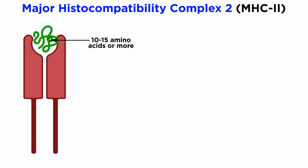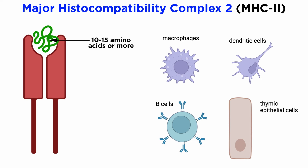MHC class II molecules bind peptides that are slightly larger than those bound by MHC class I molecules — generally 10 to 15 amino acid residues long, and known to interact with even bigger peptides as well. Unlike class I MHC, which is expressed in all nucleated cells, class II MHC is exclusively expressed in professional APCs such as macrophages, dendritic cells, and B cells, and can also be found in thymic epithelial cells.